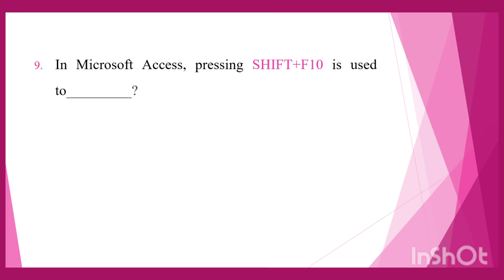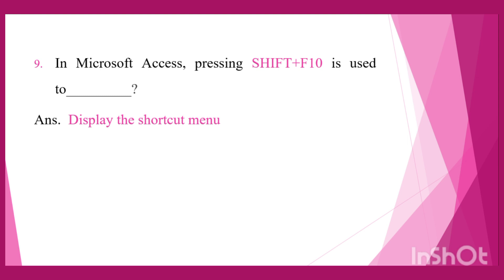Question 9: In MS Access, pressing Shift + F10 is used to display the shortcut menu. The right answer is: display the shortcut menu.